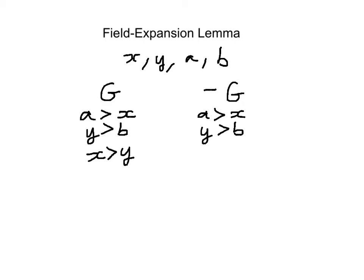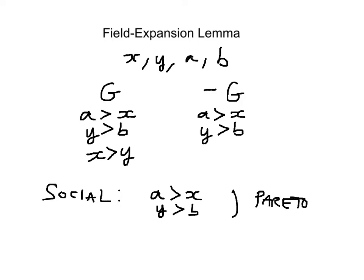By the Pareto criterion, all members — both of G and not G — are in agreement that A must be preferred to X and Y must be preferred to B. In addition, we know that X is preferred to Y because G is decisive. So if A is preferred to X, X is preferred to Y, and Y is preferred to B, by transitivity we must have A preferred to B.